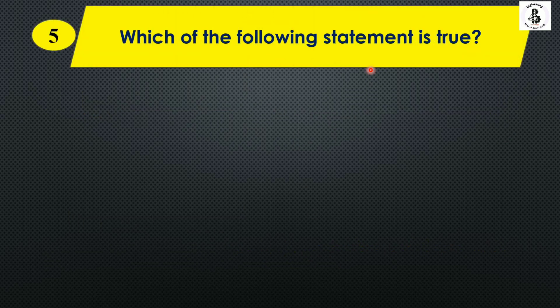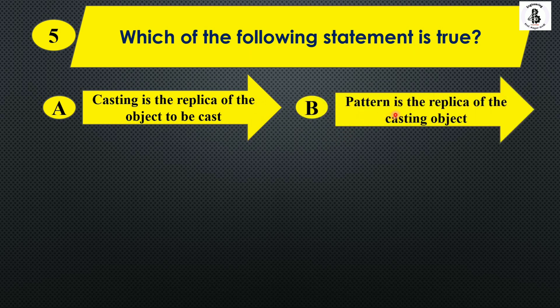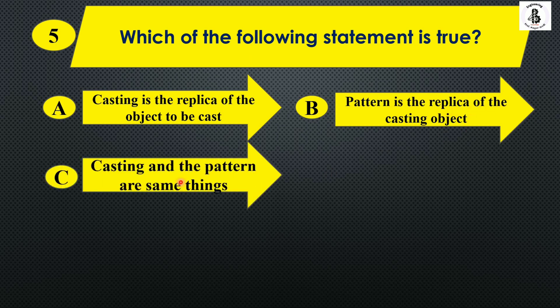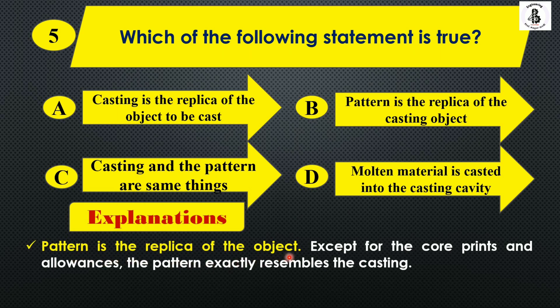Which of the following statement is true? Option A: casting is the replica of the object to be cast. Option B: pattern is the replica of the casting object. Option C: casting and the pattern are the same things. Option D: molten material is cast into the cast cavity. Pattern is the replica of the object — except for core prints and allowances, the pattern exactly resembles the casting. That is basically the definition of the pattern. So the right answer is Option B.